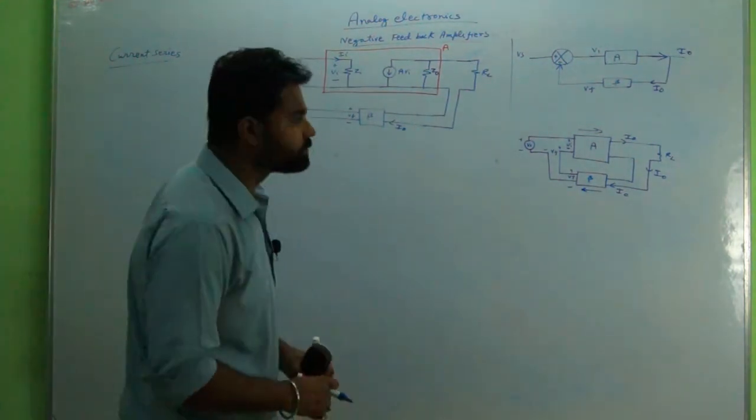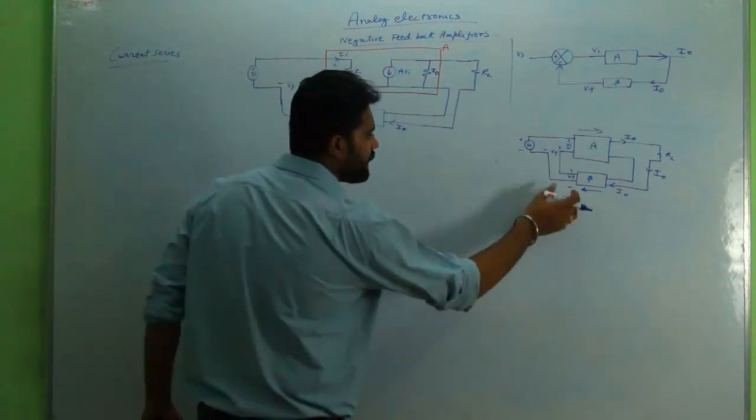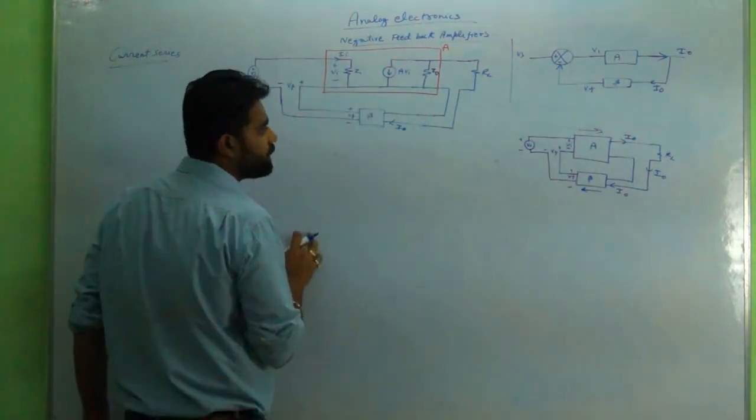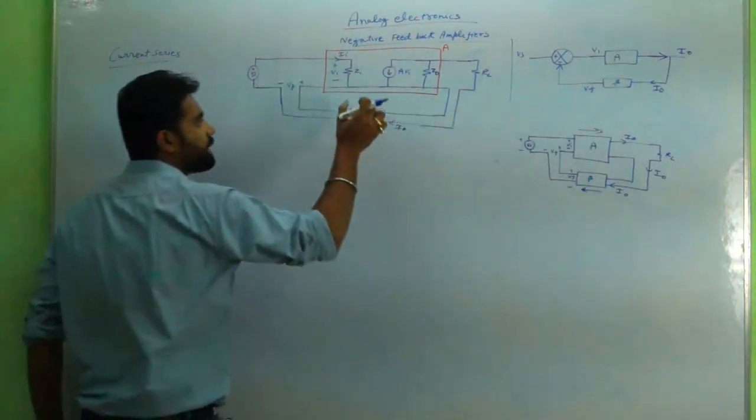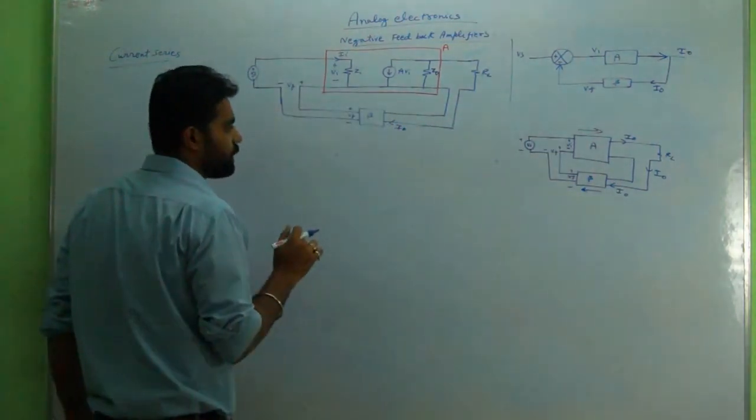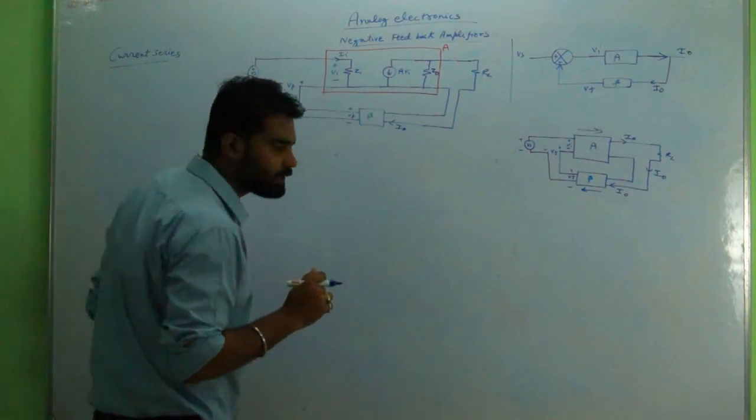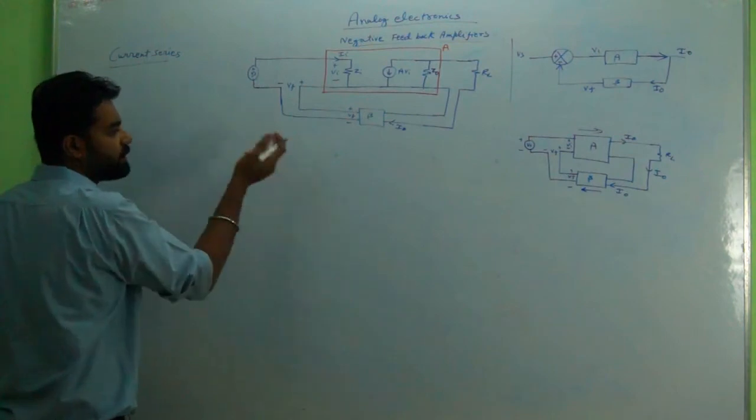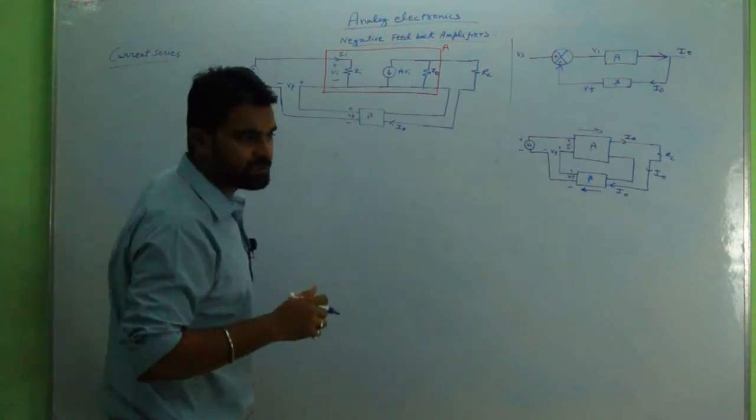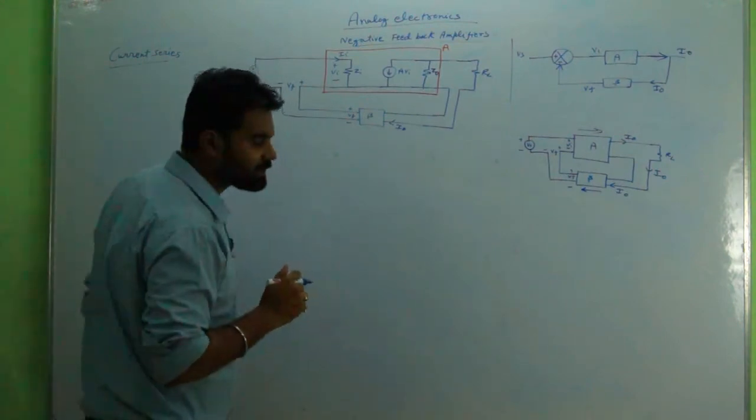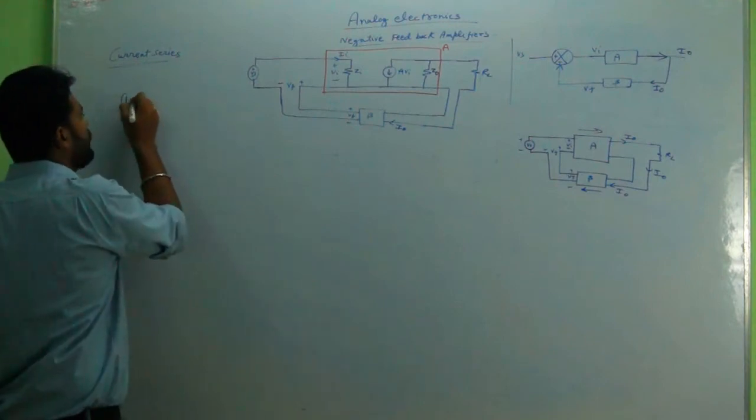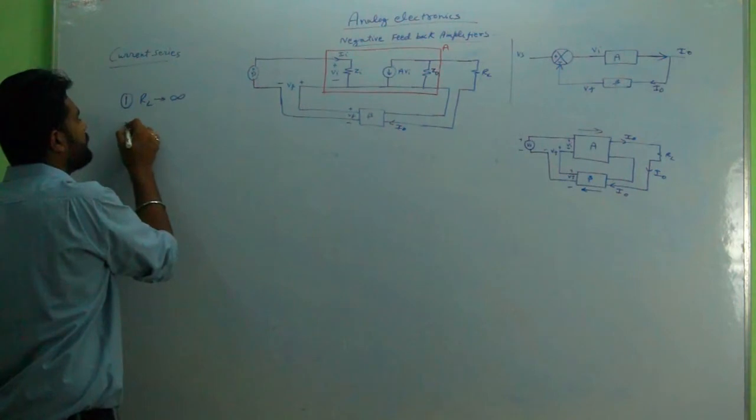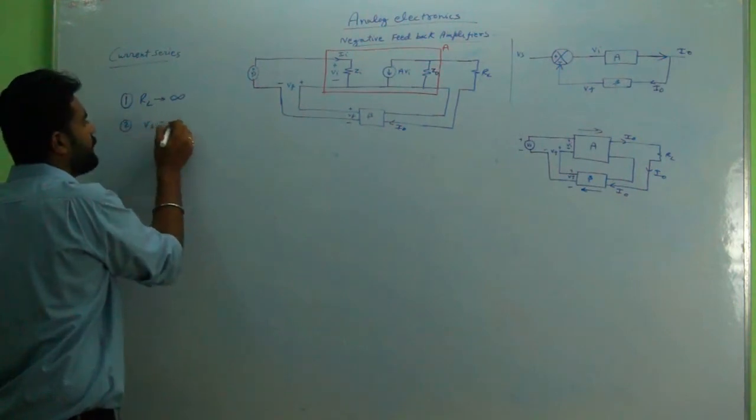As we can see, I have drawn the diagram that we discussed and the detail diagram of an amplifier. As we are discussing output impedance, there are two things that must always be considered: first one is R_L should be taken as infinity, and second one is V_s should be taken as zero.